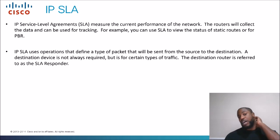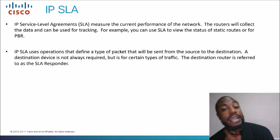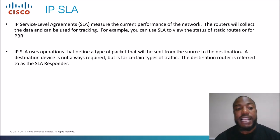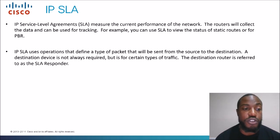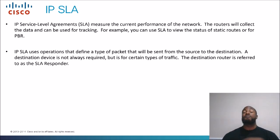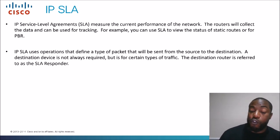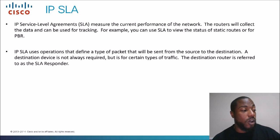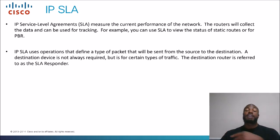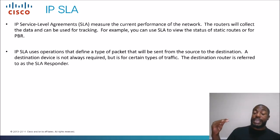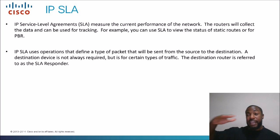IP SLA uses operations that define a type of packet that will be sent from the source to the destination. A destination device is not always required, but it is for certain types of traffic. The destination router is referred to as the SLA responder. So we're measuring networking performance — we'll have a responder and a query device that sends pings. We measure how long a ping takes to come back and check for latency, jitter, and packet loss.